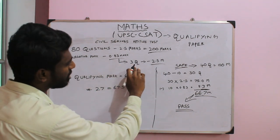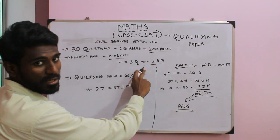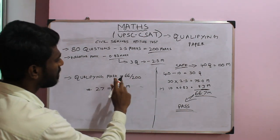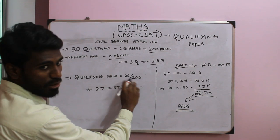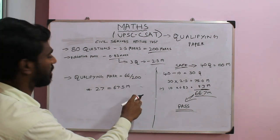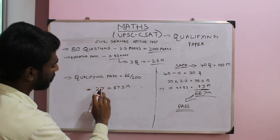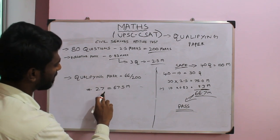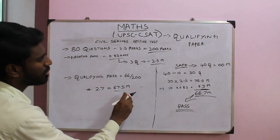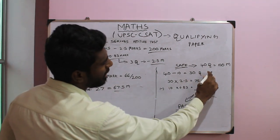So if you attempt 3 wrong questions, you will lose 2.5 marks — equivalent to one question's marks. The qualifying marks required are 33%, which is 67.5 marks. For a safe side, you need around 75 marks in total. With 10 negative answers, you lose 8.3 marks, giving you approximately 66.7 marks — still safe.